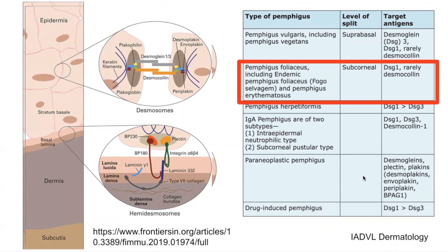In terms of Pemphigus foliaceus, the target is typically Desmoglein 1, which is a component of the desmosomes that allow keratinocytes to bind together in the skin.